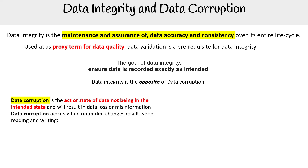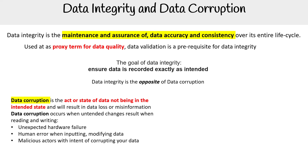Data corruption occurs when unintended changes result during reading or writing. This can happen due to a hardware failure, someone inputting the wrong data, someone intentionally being malicious to corrupt your data, or unforeseen side effects from computer code — where you wrote code and didn't know it was doing something it wasn't supposed to be doing.